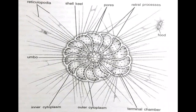The part of cytoplasm within the shell is called endoplasm, and that outside it the ectoplasm. Endoplasm contains nucleus, food particles, minute vacuoles, Golgi bodies, mitochondria, endoplasmic reticulum, ribosomes, and color granules or xanthosomes.